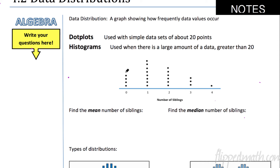Let's review how to do a dot plot. We have 'number of siblings' here — that tells us what it's about. We see that above the zero, there are four dots, meaning four people have zero siblings. Counting up above the one: one, two, three, four, five, six, seven, eight — so eight people have one sibling.